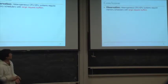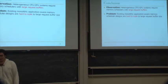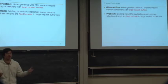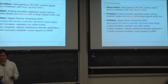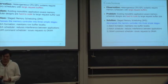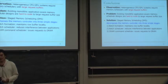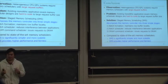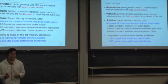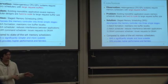In conclusion, we observed that heterogeneous CPU-GPU systems require memory schedulers with large request buffers. Existing memory schedulers are hard to scale with increased buffer sizes. Our proposal decomposes the memory controller into three simpler stages: batch formation maintaining row buffer quality, batch scheduler reducing inter-application interference, and DRAM scheduler issuing requests to DRAM. Compared to state-of-the-art memory schedulers, SMS is significantly simpler, more scalable, and provides high performance and fairness.